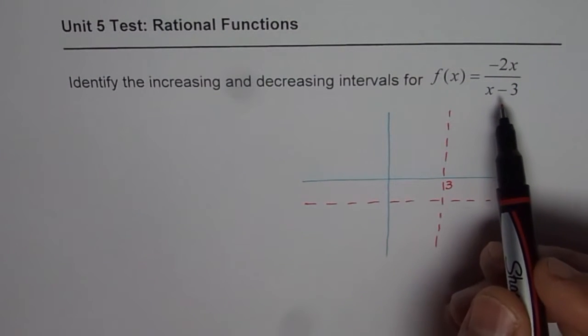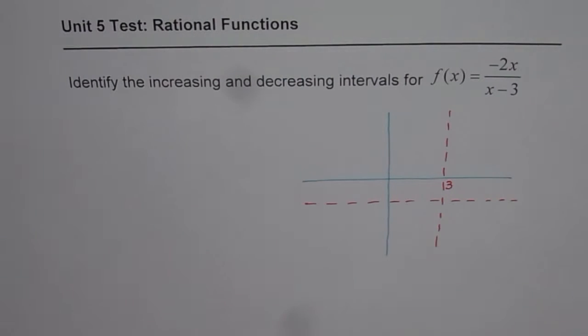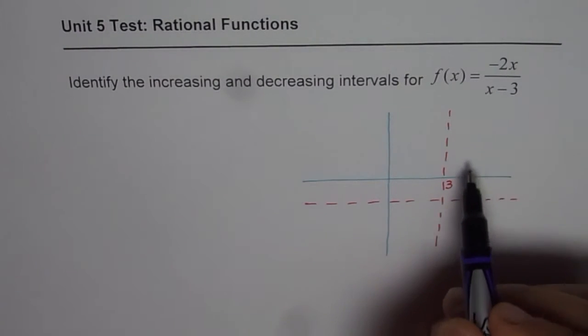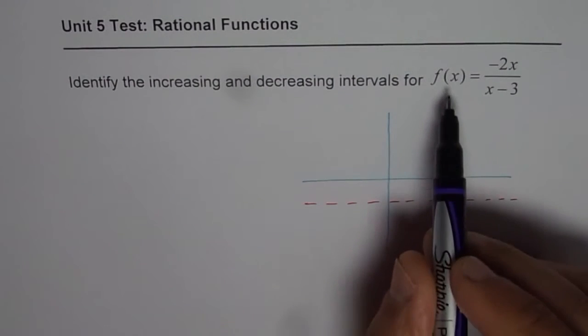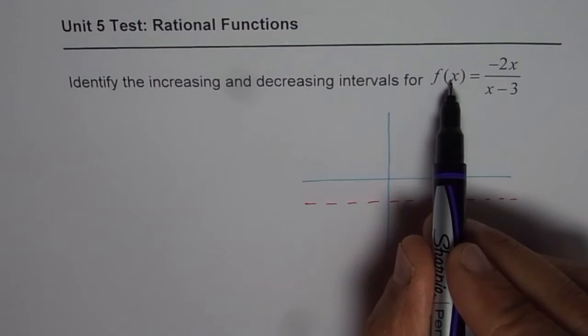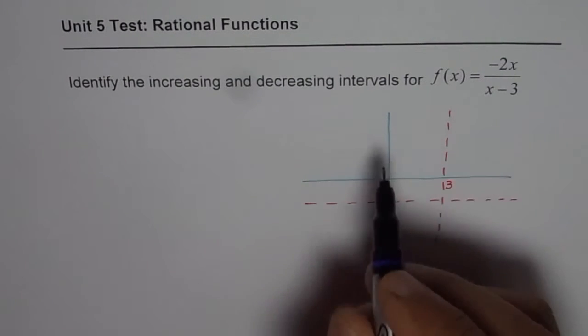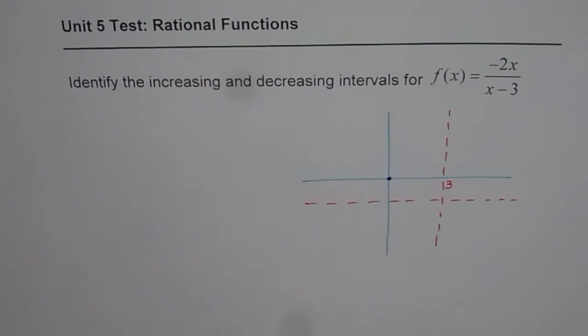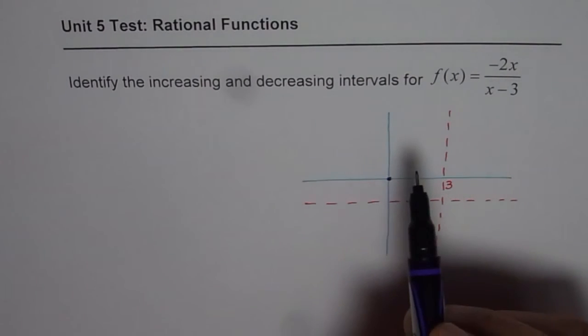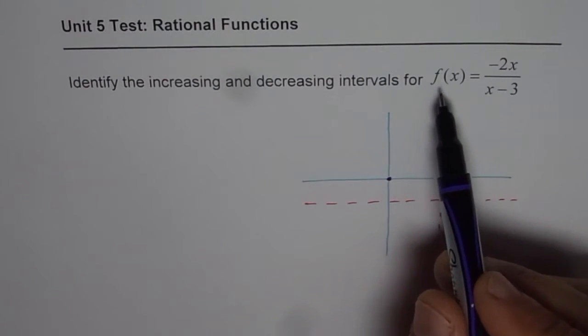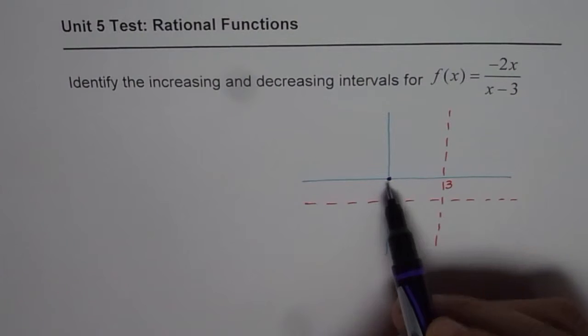Now look for x and y intercepts. Where is the x intercept? x intercept will be when f(x) is 0. Numerator is 0 for that value. So x equals 0 will give you x intercept. How about the y intercept? In this case both are same, x and y intercepts.